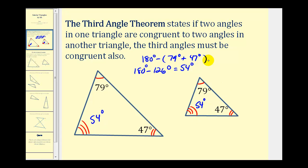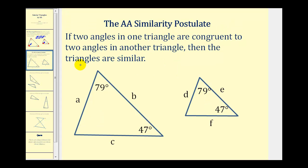This is really the basis for determining whether two triangles are similar using angle-angle. The angle-angle similarity postulate tells us that if two angles in one triangle are congruent to two angles in another triangle, then the triangles are similar. So really from the previous theorem, we know that the third angles would also be congruent, but this postulate saves us from having to determine the measure of that third angle.